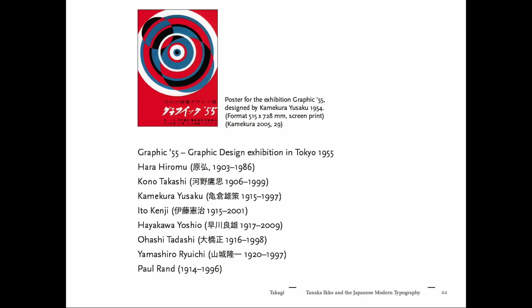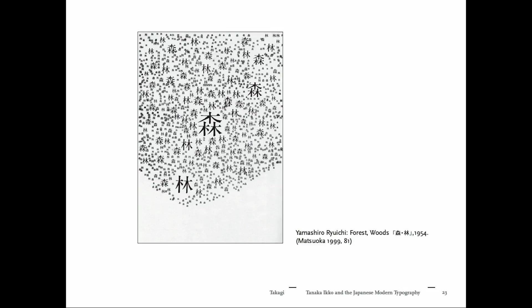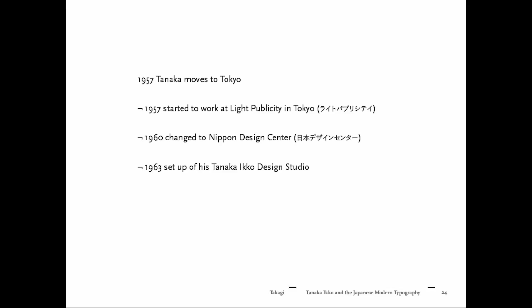In 1955, there was a big exhibition in Tokyo held at a department store. All the big names known before the war were showing their new work there, among them also Paul Rand. Tanaka traveled overnight by night train to attend. He described seeing Yamashiro's poster as a kind of shock — an eye-opener to many designers. The purely reduced use of typographic elements, white space, and tension all present in that poster extremely inspired Tanaka.